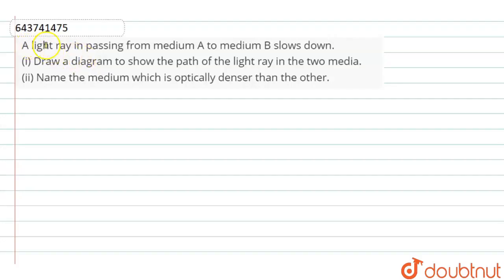Hello dear students, the question is: a light ray is passing from medium A to medium B, slows down. Draw a diagram to show the path of the light ray in the two media. And number two, name the medium which is optically denser than the other.